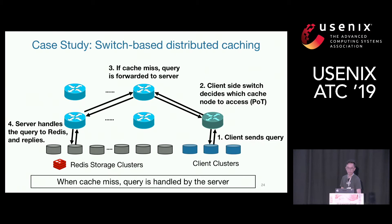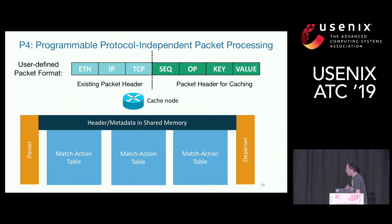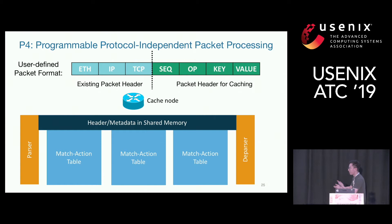If it's a cache miss, it's handled the normal way — the request goes to the corresponding storage servers running Redis. You might be curious how we use programmable switches as cache nodes. We're using an open source language called P4, which stands for Programming Protocol-Independent Packet Processors, to program the programmable switch hardware. I'll give a quick high-level overview of how this implementation looks.